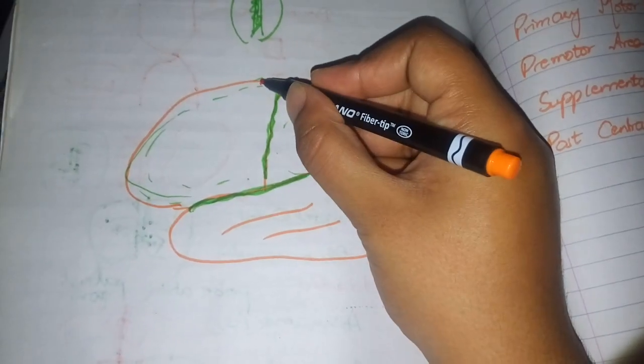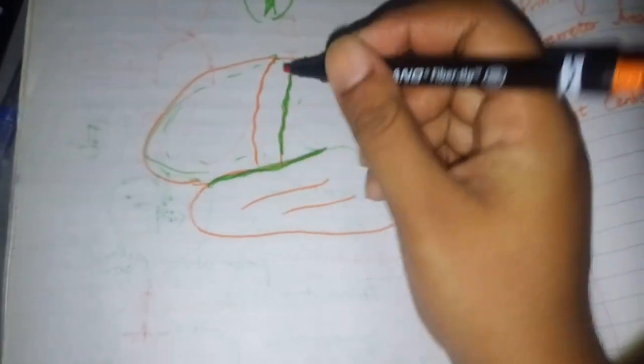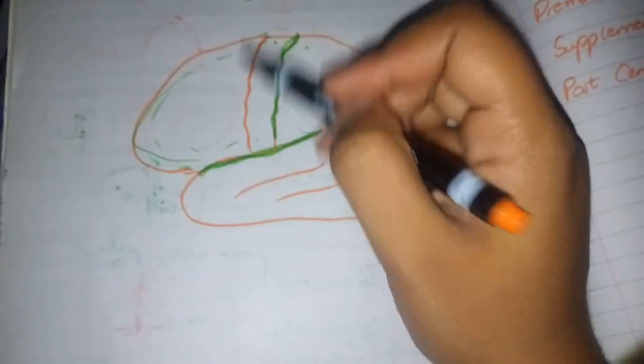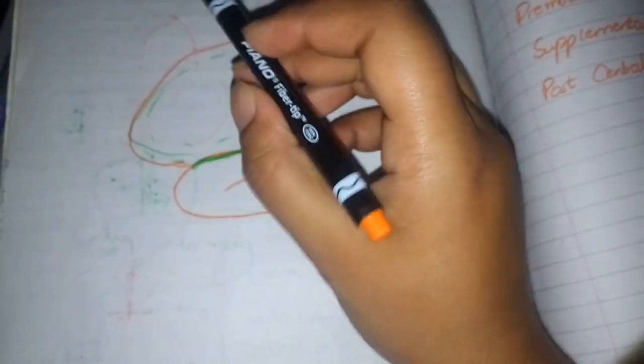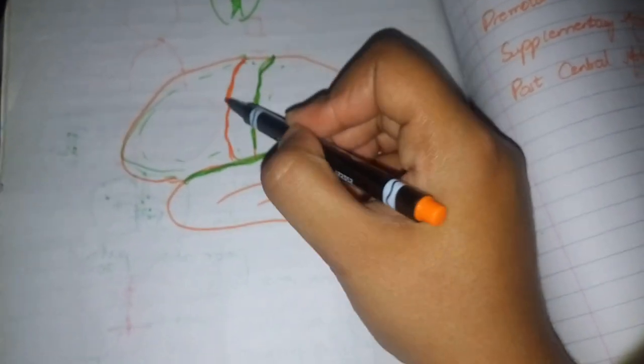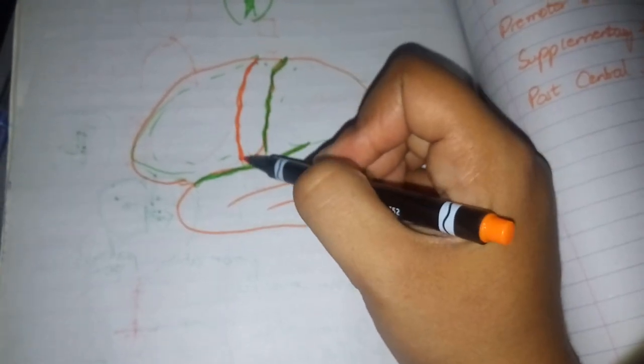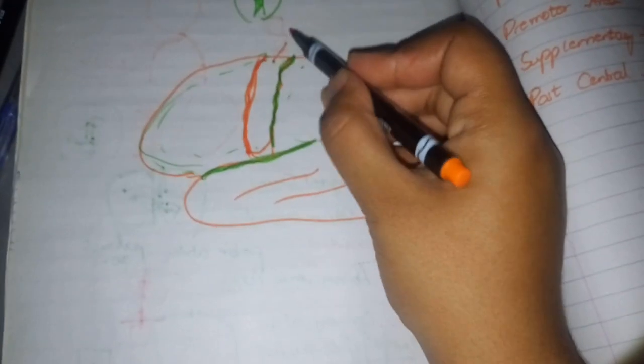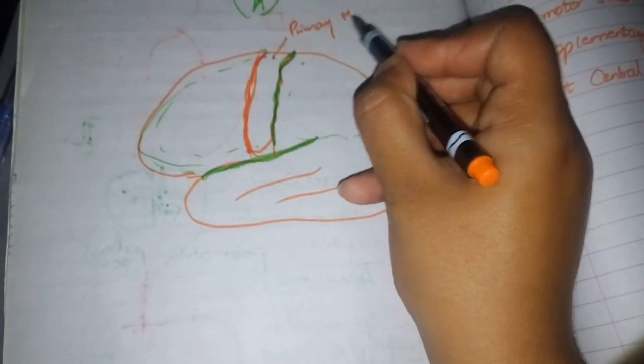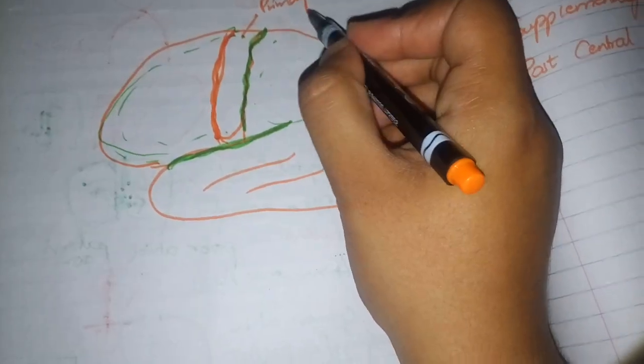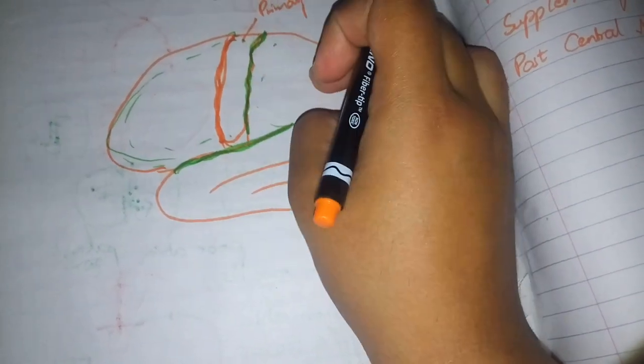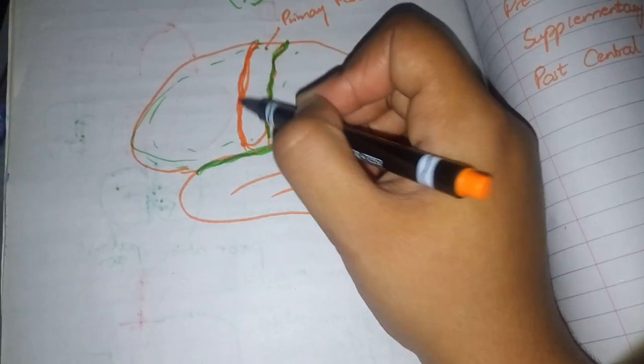First of all, central sulcus is one fissure and the gyrus in front is the pre-central gyrus. The area between pre-central sulcus and central sulcus is the primary motor cortex.